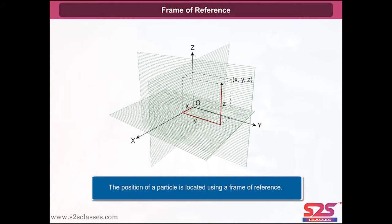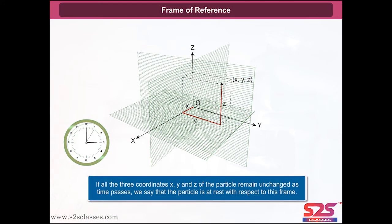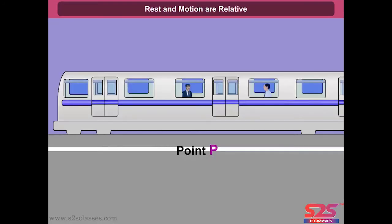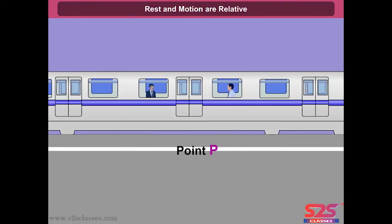If all three coordinates X, Y, and Z of the particle remain unchanged as time passes, we say that the particle is at rest with respect to this frame. If any one or more coordinates change with time, we say that the particle is moving with respect to this frame. Rest and motion are relative.